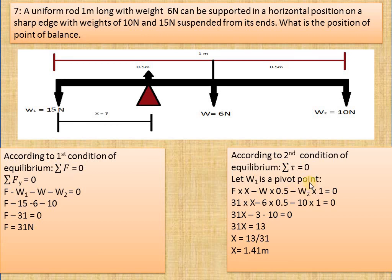W2 and its moment arm — look at this point: from the W1 pivot, the moment arm will be 1 meter because it covers the full rod length. The weight of the rod acting at 0.5 from the pivot gives us the torque value of 6 times 0.5.